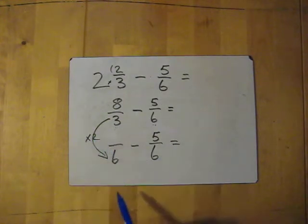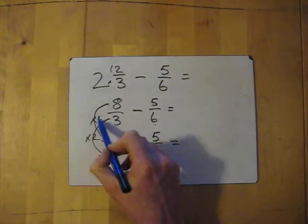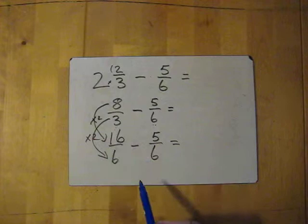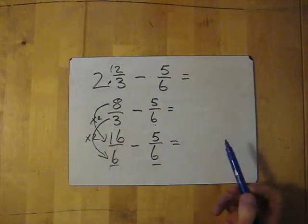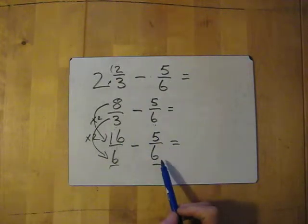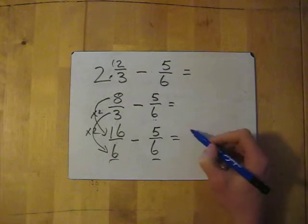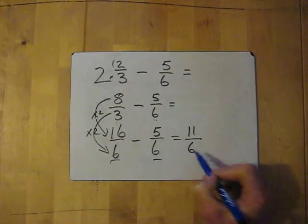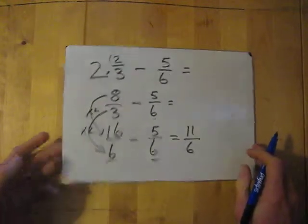What do we need to do to the top? Yes, you're right, we need to times by two. That becomes sixteen. Now we have the same denominator and that's to subtract. It's very simple - subtract top numbers keeping the bottom numbers the same. Sixteen take away five gives me eleven and then keep the bottom number the same which is six. So the answer is eleven over six.